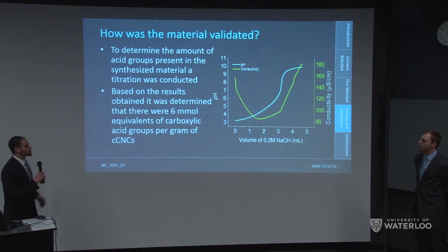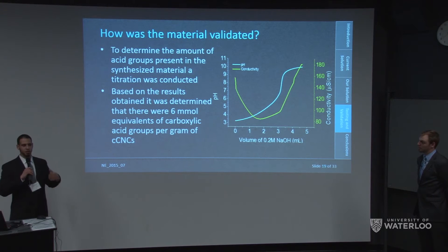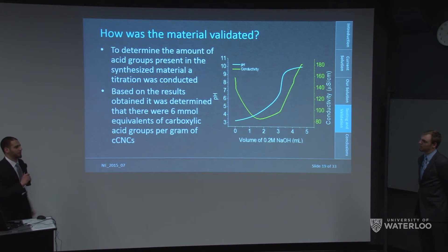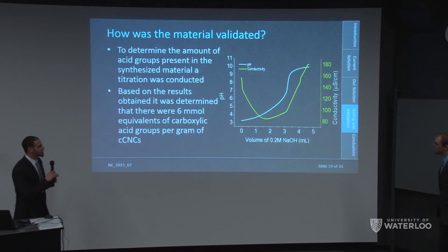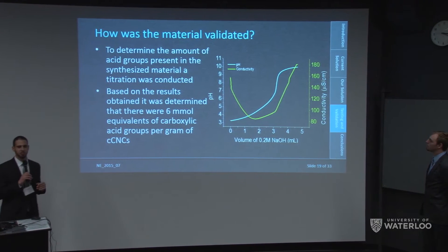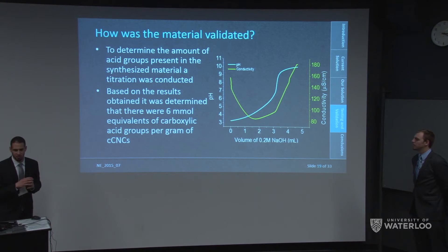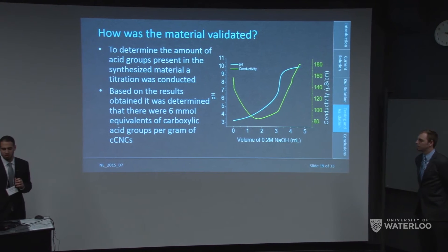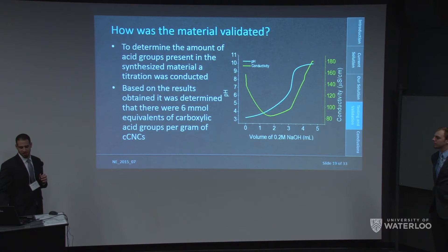Following this, we quantified the amount of carboxylic acid groups present in the material using a titration that concurrently measured the pH and conductivity of our samples. Based on the results, we determined there were 6 millimolar equivalents of carboxylic acid groups per gram of CNC.